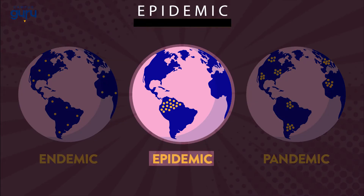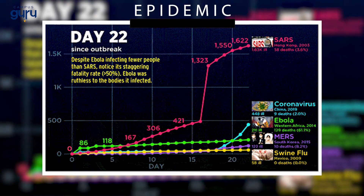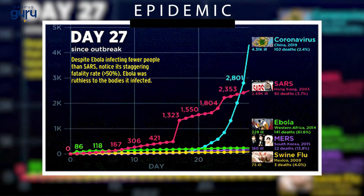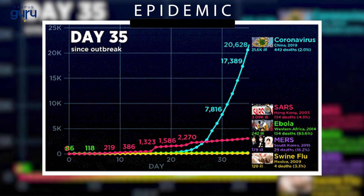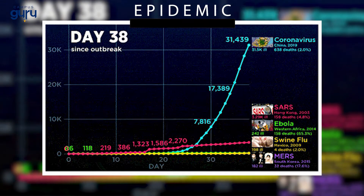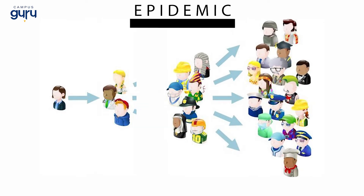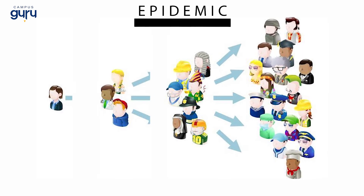Epidemic. Epidemic refers to the often sudden rise in the numbers of cases of a particular disease above the normal endemic level. The number of cases varies according to the disease-causing agent and the size and type of previous and existing exposure to the agent.